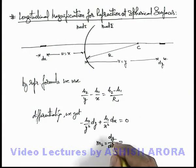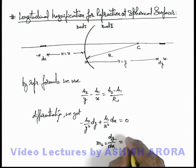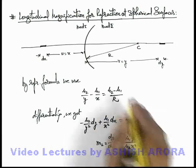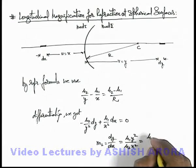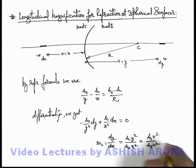This we can see the value we are getting is mu 1 y square by mu 2 x square, or in terms of u and v we can write it is mu 1 v square by mu 2 u square.